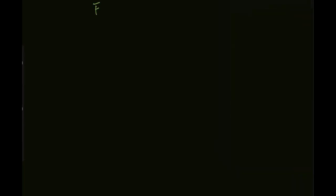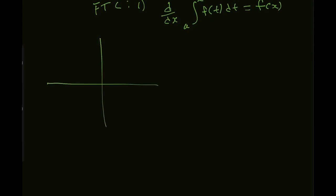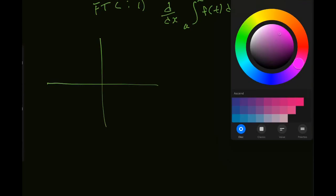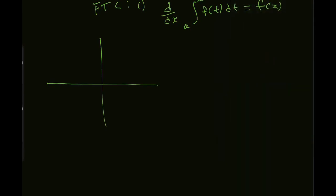So fundamental theorem of calculus part one is telling me that d/dx of the integral from a to x of f of t dt is equal to f of x. Now we're sort of confident about why it's a t and not an x. Let's get some intuition for it — and I want to emphasize once again that we're being extremely hand-wavy about this. This is not how it actually is at all; it's just a way of thinking about it to help you get an intuitive feel.